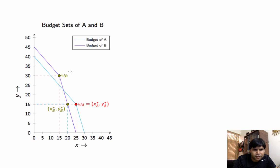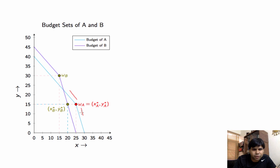Because of this difference in prices, the slope of A's budget line is going to be 1 to the left of the endowment and 3 to the right of the endowment, because that is the price ratio at which trade takes place. We are also given that A chooses his endowment point, so XA* and YA* equals 25 and 15.